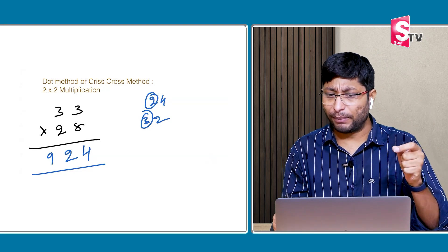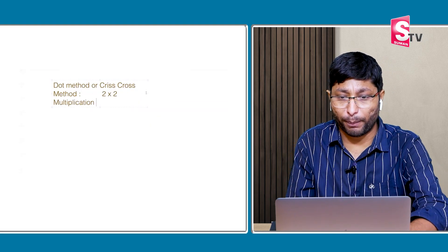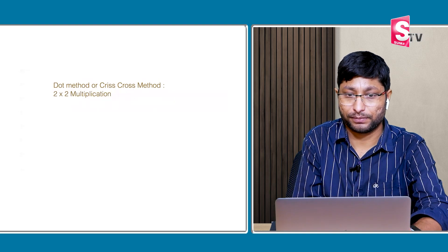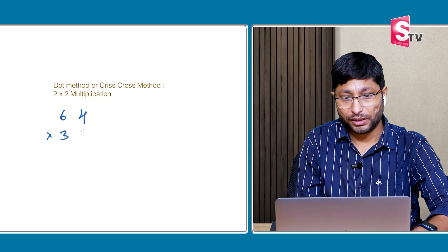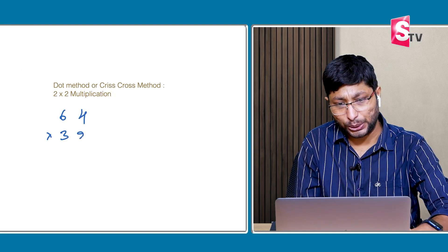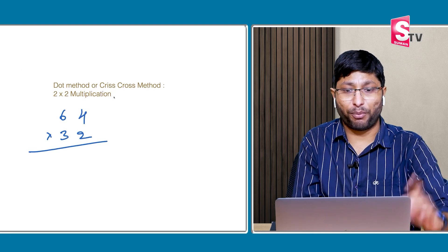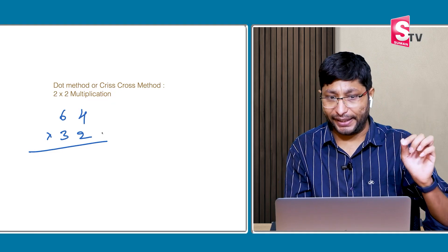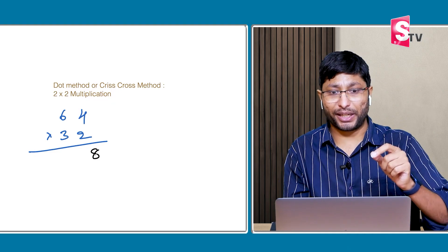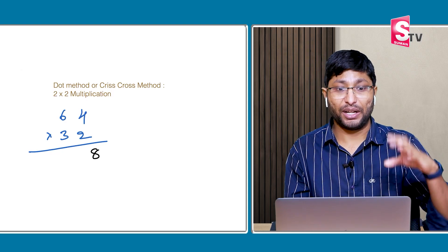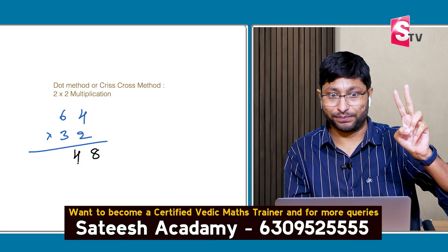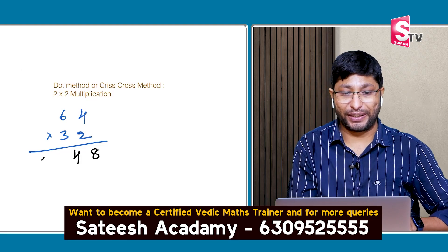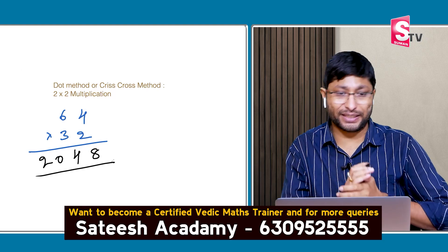One more problem on the same concept: 64 × 32. Step 1: 4 × 2 = 8, no carry. Step 2: 6 × 2 = 12, and 4 × 3 = 12. 12 plus 12 = 24. Write down 4, carry 2. Step 3: 6 × 3 = 18. Plus 2 carry = 20. The answer is 2048.